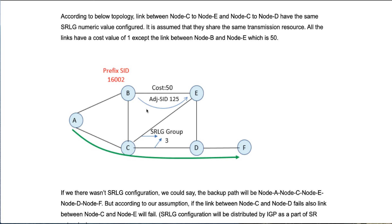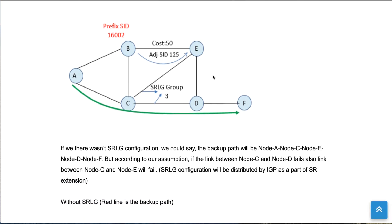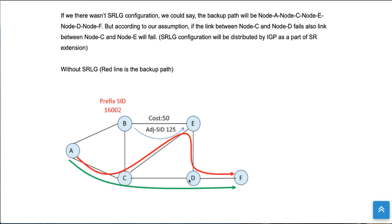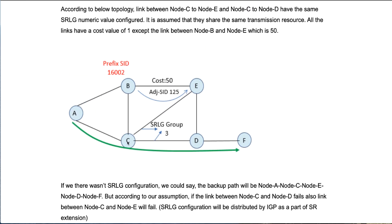If there is no SRLG configured and the link between C and D fails, our alternate path would simply be A to C, C to E, E to D, D to F — because this path has a default metric of 1 versus 50. So without SRLG, our post-convergence path would be A to C, C to E, E to D, D to F. But now we are making the assumption that the link between C and D and the link between C and E belong to the same SRLG group, meaning they share a common risk.